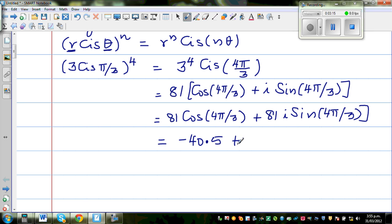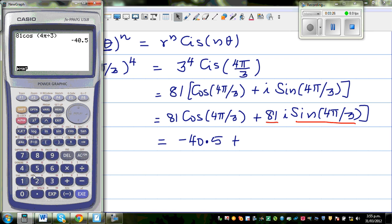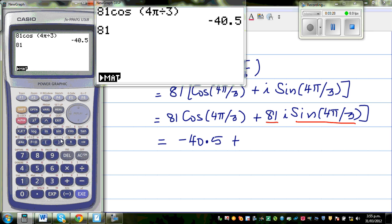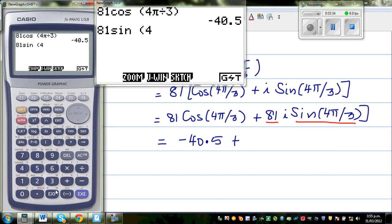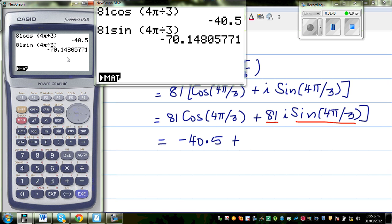Plus i, so 81i will remain there times this. So again, getting a calculator out, it's 81 sine bracket 4 shift π by 3. That is a huge number. I'll round this to two decimal places. It is minus 70.15.